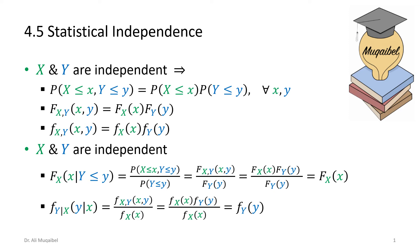Dr. McGable welcomes you again to statistical independence. We are dealing with the chapter covering multi-random variables, and the issue of statistical independence arises here. It did not arise when we studied a single random variable, since there is no point speaking about independence or dependence with only one variable. The title says 'statistical independence' because there are other forms of independence; we are just looking at statistical relations. So X and Y are independent if the following is true.